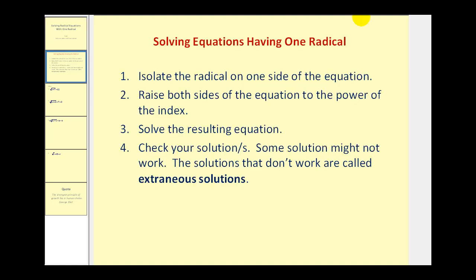Here are the steps we'll follow to solve this type of equation. Number one, we will isolate the radical on one side of the equation. Then we're going to raise both sides of the equation to the power of the index. Then we will solve and then check our solutions. The reason it's so important to check our solutions this time is some solutions may not work and these are called extraneous solutions.